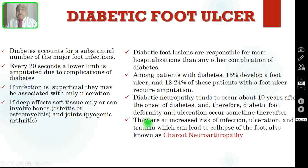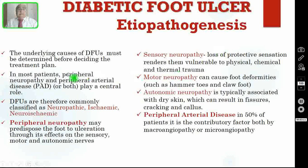It won't occur immediately after the patient develops diabetes — it will take a minimum of 10 years for diabetic neuropathy to manifest, and then only will these patients develop ulceration in the foot and diabetic deformity. So it is preventable. They are at increased risk of infection, ulceration and trauma, which can lead to collapse of the foot, also known as Charcot neuroarthropathy. The underlying causes of diabetic foot ulcers must be determined before deciding the treatment plan. In most patients, they will have peripheral neuropathy and/or peripheral arterial disease.